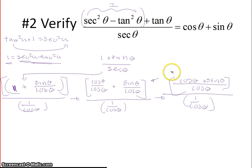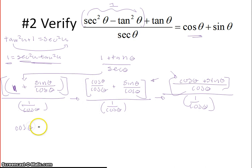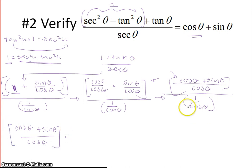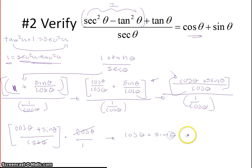The numerator here is what we want. Since we have a fraction divided by a fraction, we multiply by the reciprocal of the denominator, which is cosine of theta over 1. The cosine of theta terms cancel, and I'm left with cosine of theta plus sine of theta, which is what I wanted. We're working one side only.